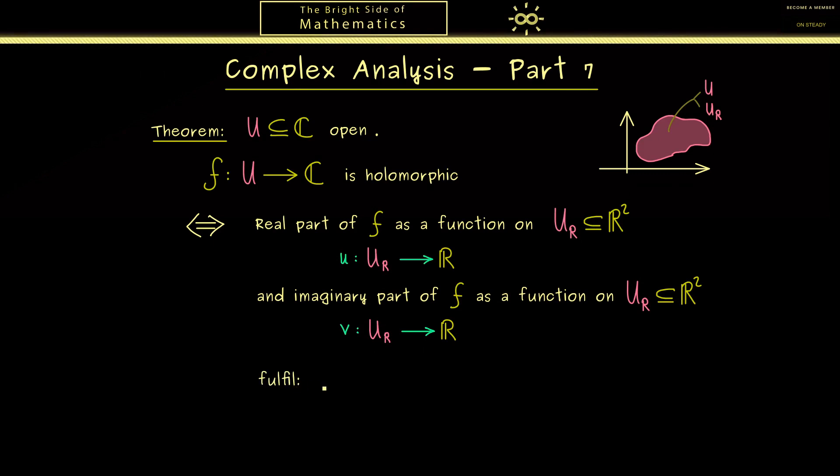Indeed the property that F is holomorphic translates into the fact that u and v fulfill the Cauchy-Riemann equations. These are not complicated at all, they are just two partial differential equations. The first one simply says that the partial derivative of u with respect to x is the same as the partial derivative of v with respect to y. And then in the second equation you see when you switch the roles there is a minus sign included.